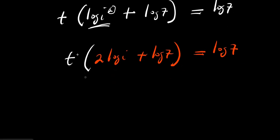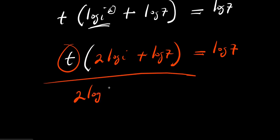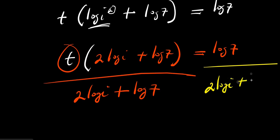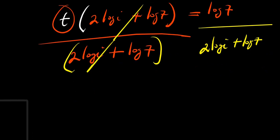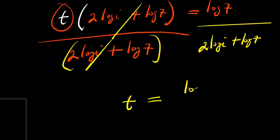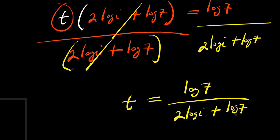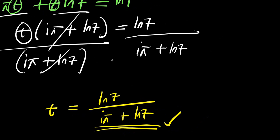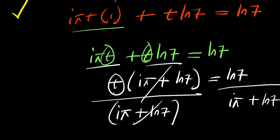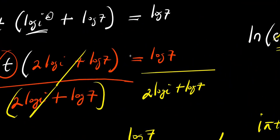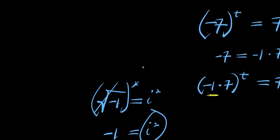Since I'm solving for t, I want to isolate it. I divide both sides by 2 log i plus log 7, and this eliminates from the left side. So I'm going to have t equals log 7 divided by 2 log i plus log 7. So that is it, ladies and gentlemen. Thank you and goodbye.